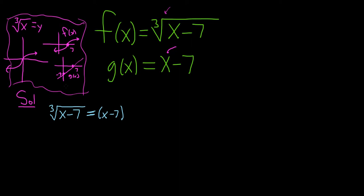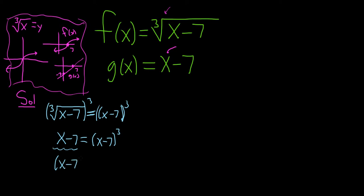Now we have to solve for x. We can cube both sides: cubing the left gives us x minus 7, and cubing the right gives us x minus 7 cubed. So we subtract the x minus 7 piece over, writing it as: x minus 7 cubed minus (x minus 7) equals 0.